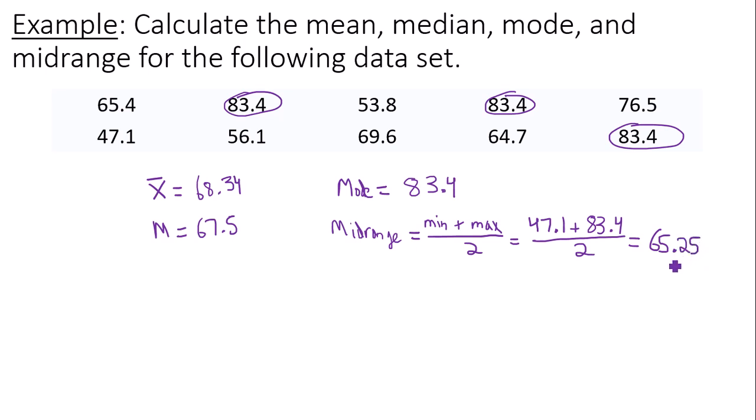So you get 65.25. And those are your four measures of central tendency for this data set. Thank you for watching.